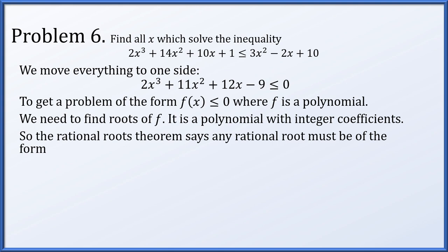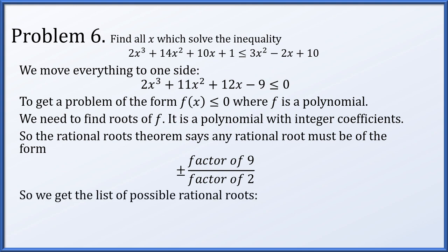We apply the rational roots theorem. Any rational root must be ±(factor of 9) / (factor of 2), giving possible roots ±1, ±3, ±9, ±1/2, ±3/2, ±9/2 — 12 different numbers to try. Plugging in x = 1 gives a positive result, and x = -1 gives a negative result, so neither is a root. Plugging in x = 3 also gives a large positive value.